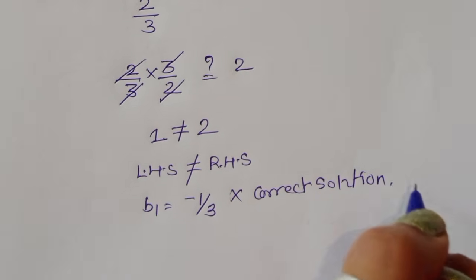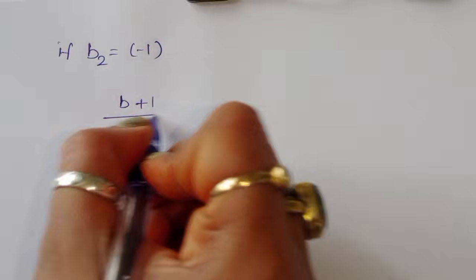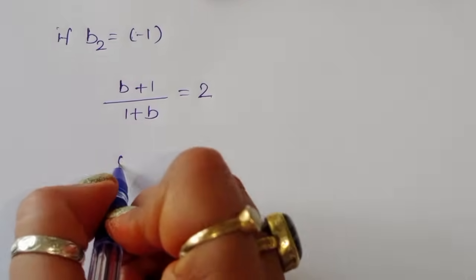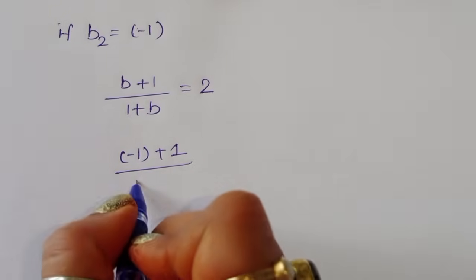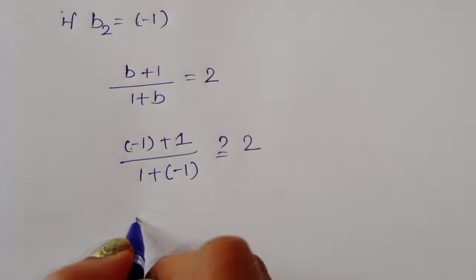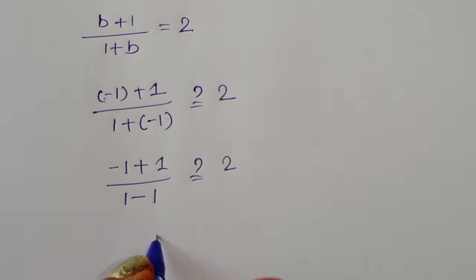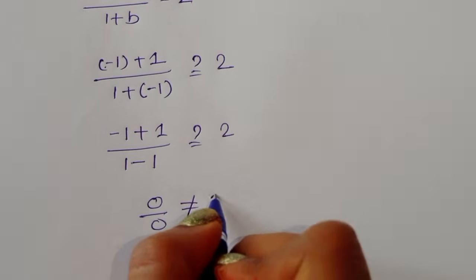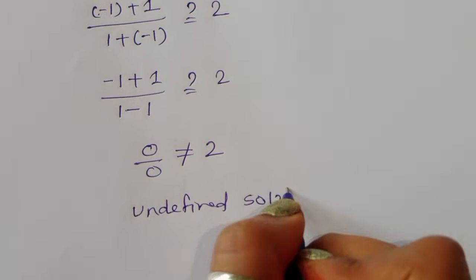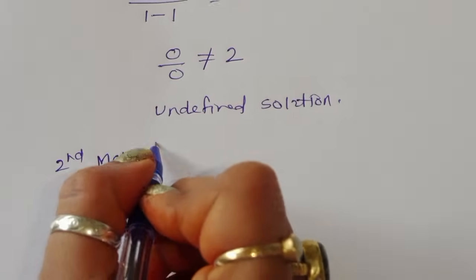Now checking b2 = -1. Substituting into (b + 1)/(1 + b): (-1 + 1) divided by (1 + (-1)) gives 0 divided by 0, which is undefined. So b2 = -1 is also an undefined solution.